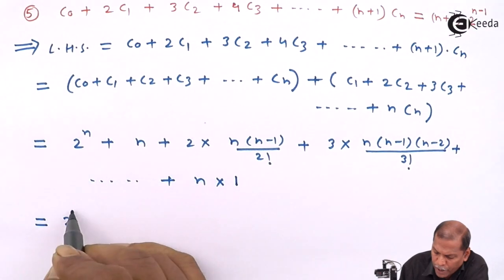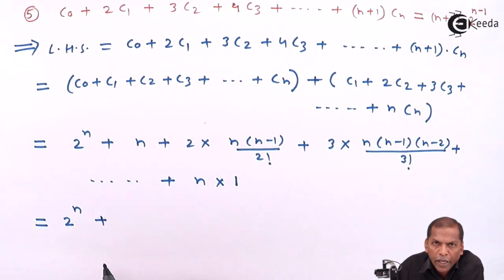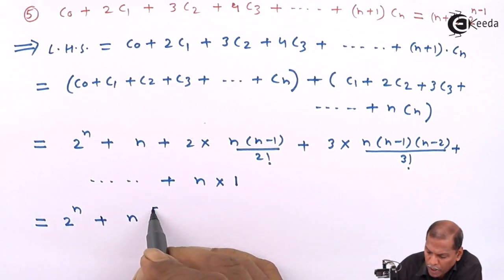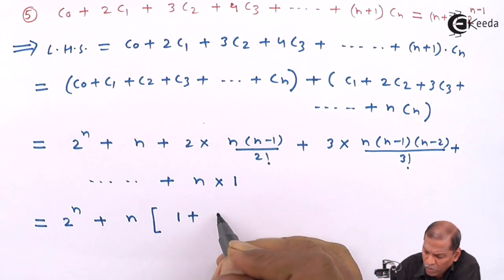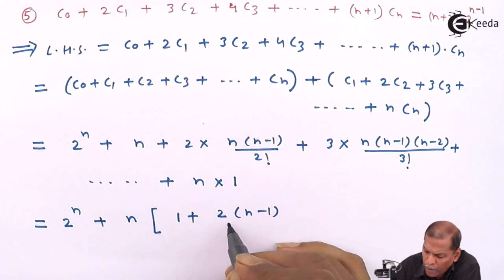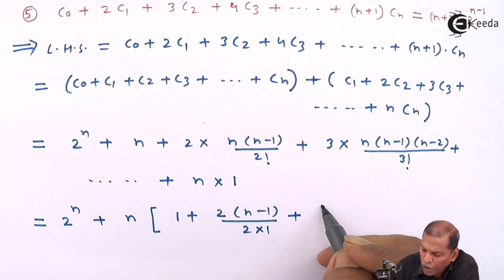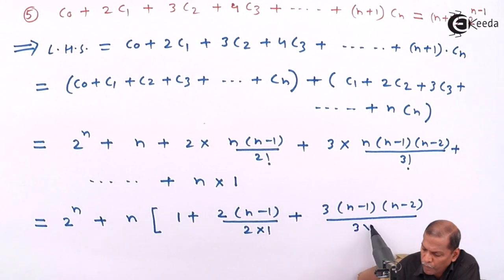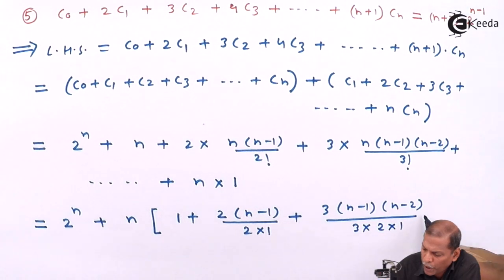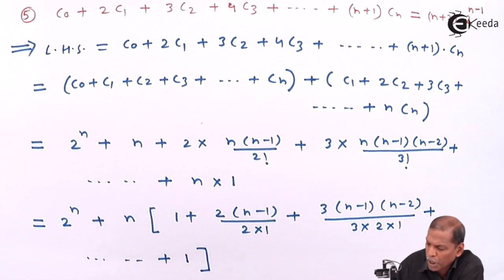So the next step is 2 raised to n, plus — from the remaining terms we take n common — so n in brackets we have: 1 plus 2·(n−1) upon 2 factorial, plus 3·(n−1)(n−2) upon 3 factorial, going on, plus the last term is 1, and finally the square bracket closes.